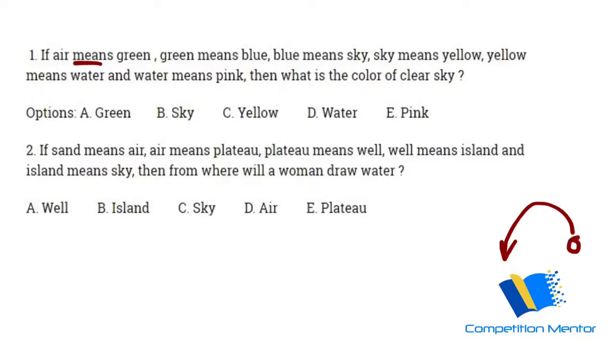So what is the color of clear sky? The color of clear sky is blue. So if blue, then you will consider this one and you will go here. So green means blue, hence the answer is green, option A.